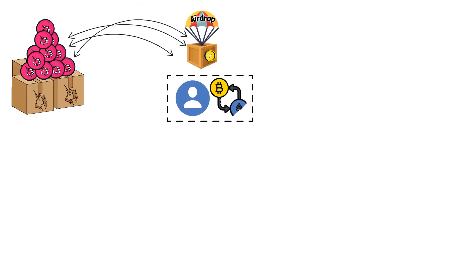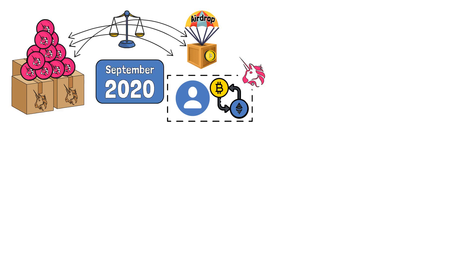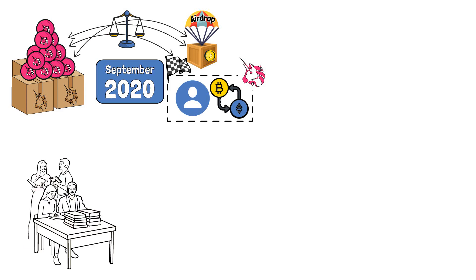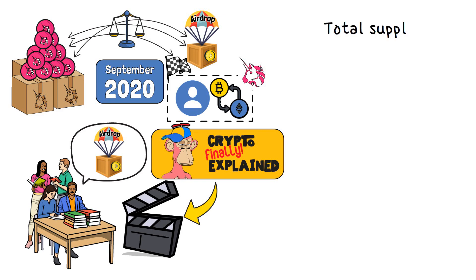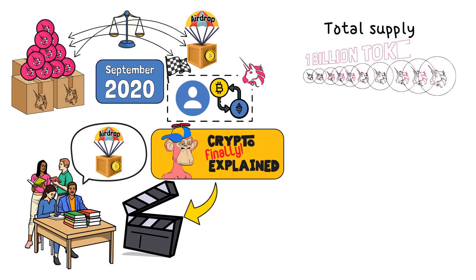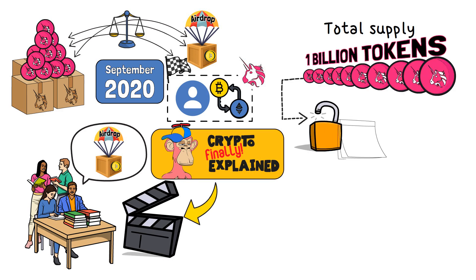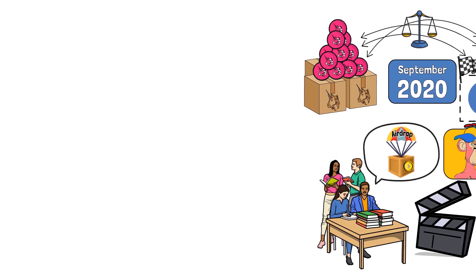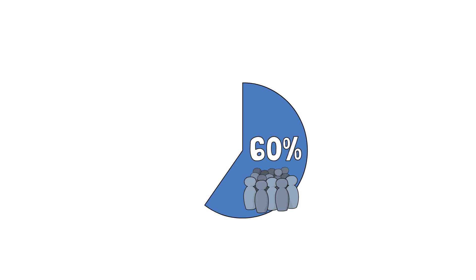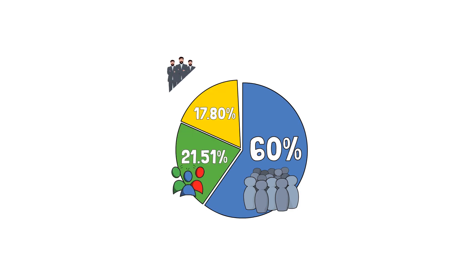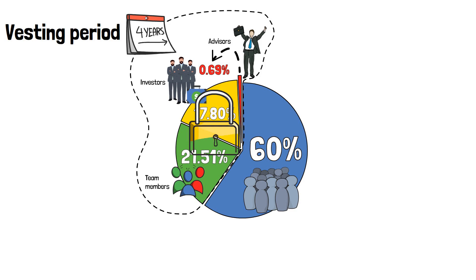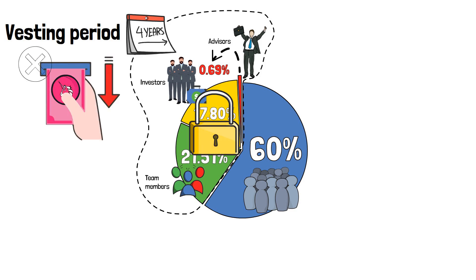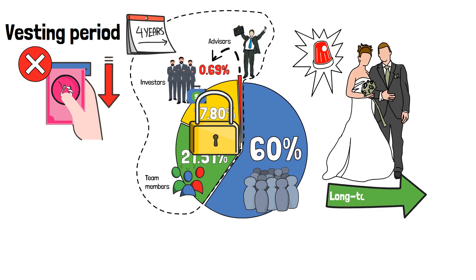But what about UNI's tokenomics? UNI tokens were initially distributed through an airdrop to individuals who had traded on Uniswap prior to September of 2020, providing an inclusive way to distribute tokens to early users and contributors. As for the token's total supply, Uniswap minted a total of 1 billion UNI tokens, which are gradually unlocked over a period of 4 years to ensure a controlled release and price stability. The initial distribution allocated 60% to the community, 21.51% to the team, 17.8% to investors, and 0.69% to advisors. Team members, investors, and advisors have a 4-year vesting period, meaning their funds are locked and cannot be withdrawn immediately — signaling a commitment to the project's long-term success.